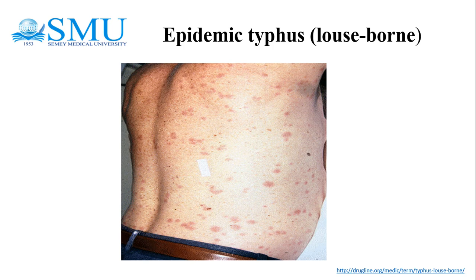The zoonotic cycle is maintained by eastern flying squirrels and their lice and fleas. Brill-Zinsser disease is a recrudescent illness occurring years after acute epidemic typhus; the organism remains latent for years and reactivation occurs due to waning immunity, leading to sporadic infection or outbreaks.